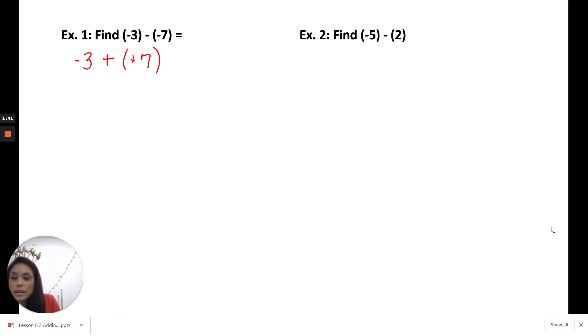So we have negative 3 plus a positive 7. We are going to subtract the smaller absolute value from the larger. So 7 minus 3 equals 4. And this 7 is the larger number, so we keep that sign, which is positive. So this is a positive 4 as the answer.